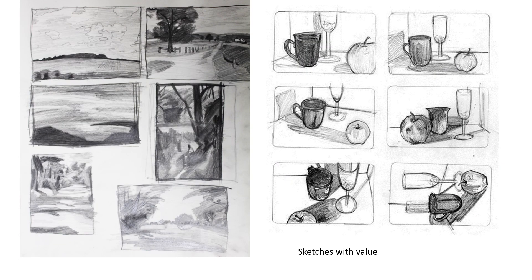Another type of sketch you'll be doing is sketches with value. In this case, there are three values: the darkest, a medium value, and then the white of the paper. This is a way to generalize and look for the large areas of value within your sketches.